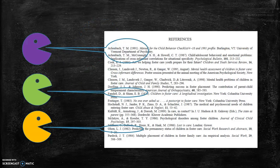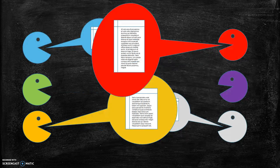Researchers explain their place in the scholarly conversation using in-text citations in the body of an article and bibliographies or works cited pages at the end of an article. These citations show the previous research that has influenced new studies. The more times a particular paper or book has been cited by other researchers, the more influential that paper or book is. A high citation count doesn't automatically mean that a paper or book is better than other similar research, but it does mean that its authors have a loud voice in the scholarly conversation.